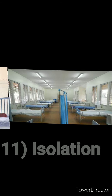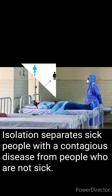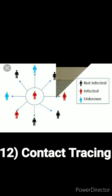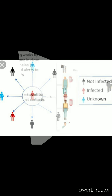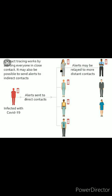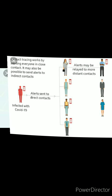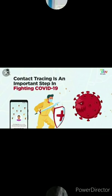Kisi bhi infected vyakti ko population se alag rakhna isolation kehlata hai, aur jahan rakha jata hai use isolation ward kehte hai. Contact tracing is the process — kisi bhi individual joh infected hai, ke sampark mein aaye logon ko identify karna, unko dhundhna taaki kisi bhi contagious disease ko failne se roka ja sake.